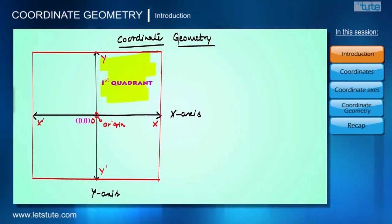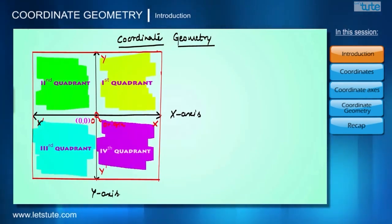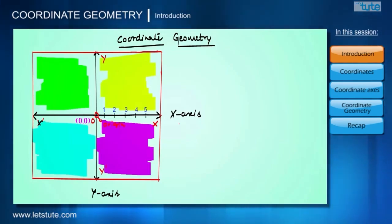This is the first part called the first quadrant, second quadrant, third quadrant, and this is the fourth quadrant. The X axis has positive values on the right side of the origin and negative values on the left side of the origin. Similarly, Y axis has positive values above the origin and negative values below the origin.